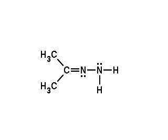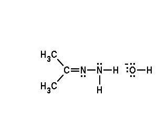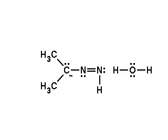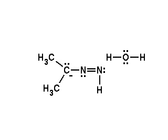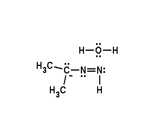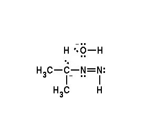Base-catalyzed tautomerism occurs as a hydroxide ion removes a proton from the terminal nitrogen atom, forming an enol-like structure, followed by rearrangement to form a keto-like form in which the partially negatively charged carbon atom is protonated by water.